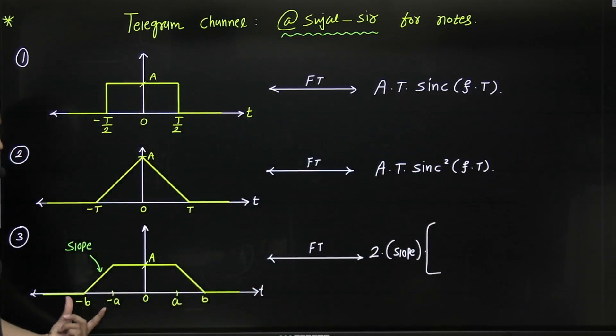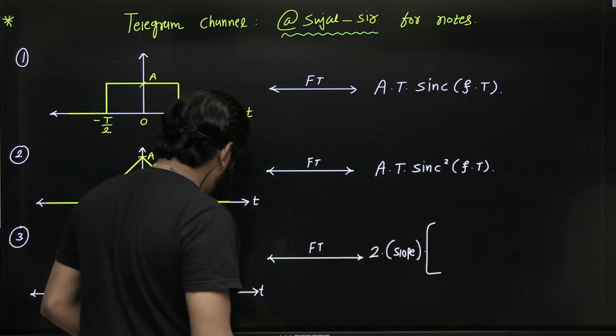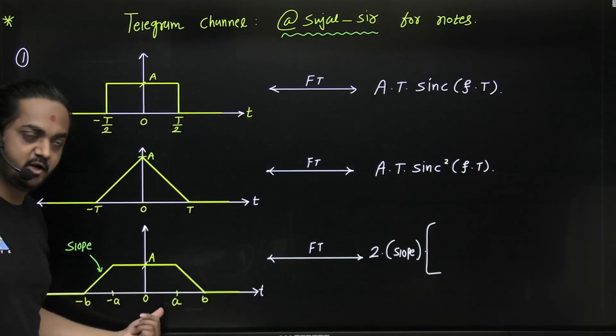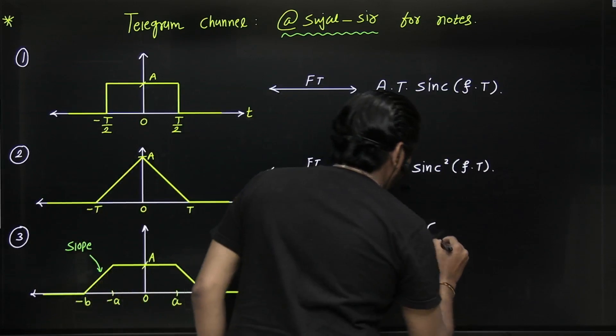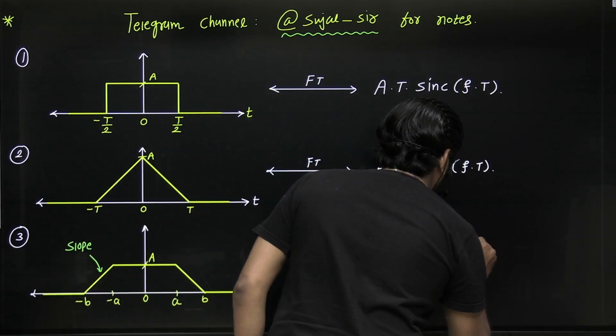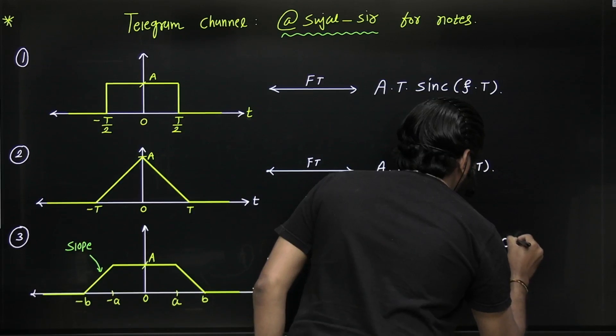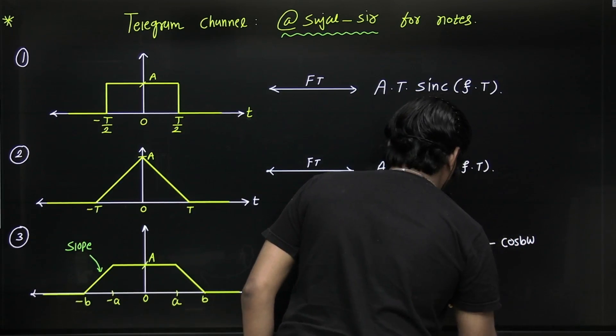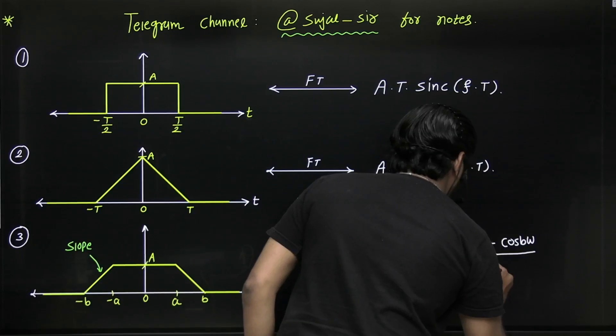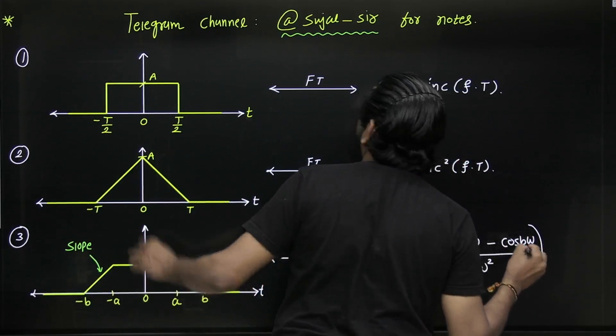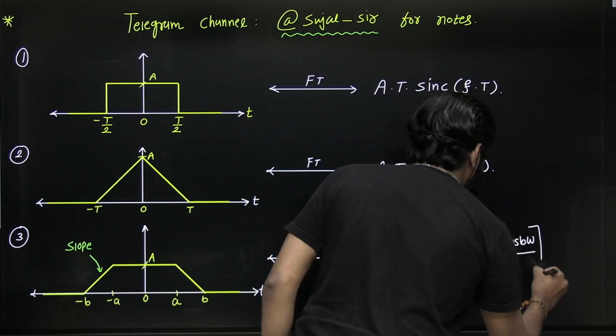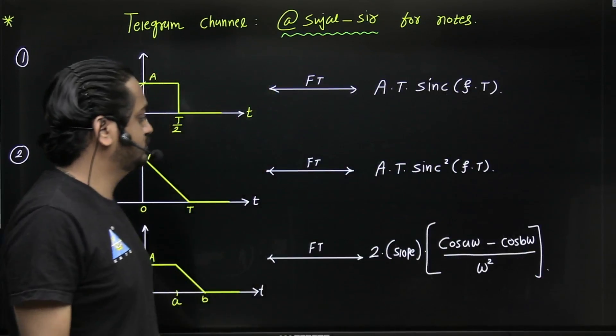See, two times positive slope value into the bracket: cos a omega minus cos b omega divided by omega squared.